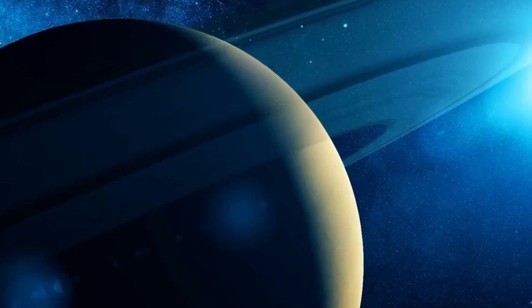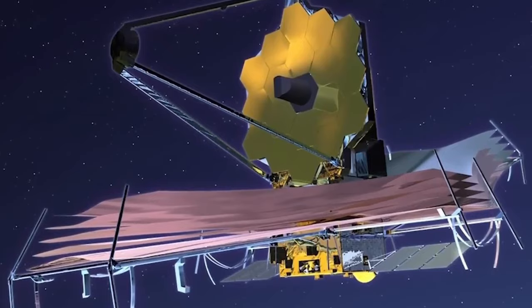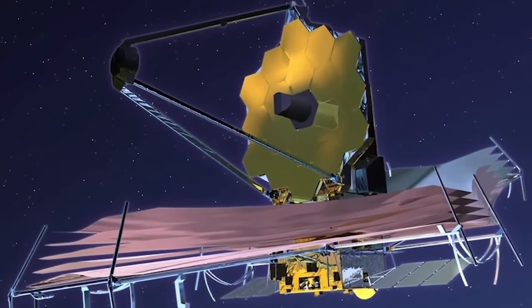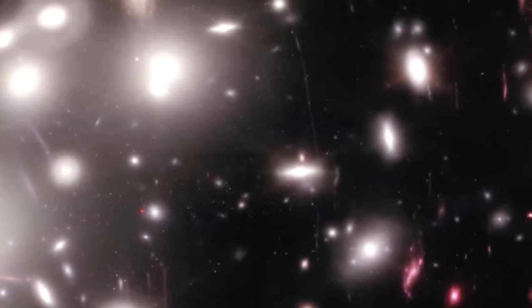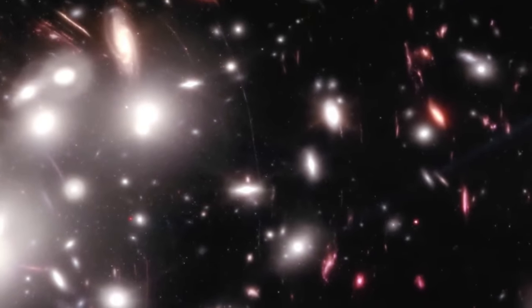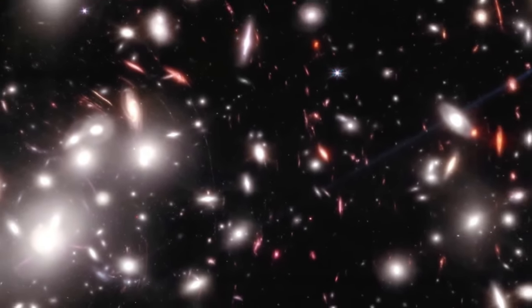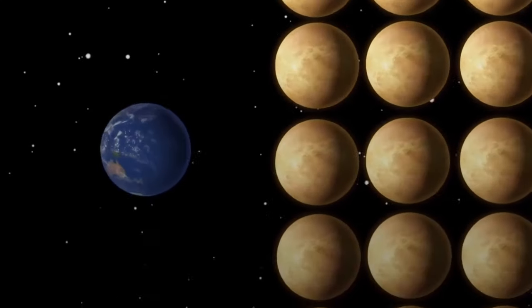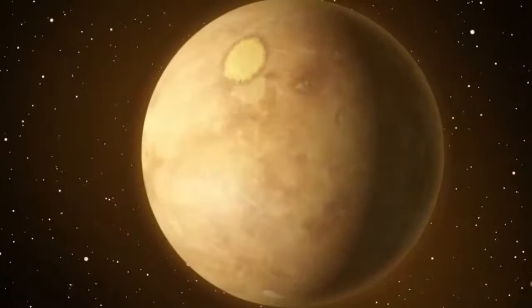Delving further into the cosmic past, the JWST gazes over 12 billion years, revealing ancient galaxies with surprising characteristics. Contrary to predictions based on our understanding of galactic chemistry, these galaxies produced fewer heavy elements than anticipated. Previous instruments lacked the power to discern the chemical makeup of galaxies so far back in time, but the JWST, with its unparalleled capabilities, uncovers a break in the relationship between star formation, mass, and chemistry, challenging our existing models.